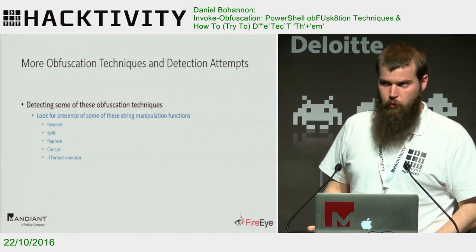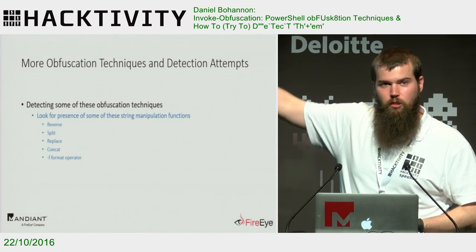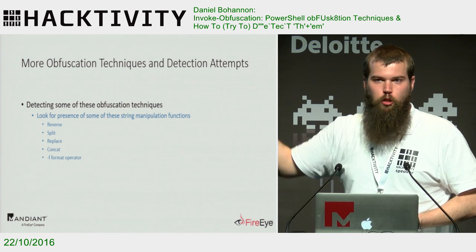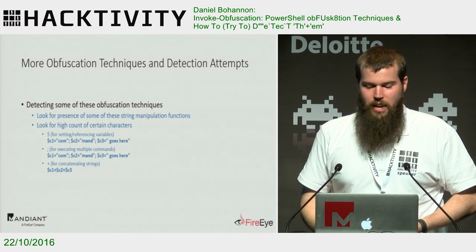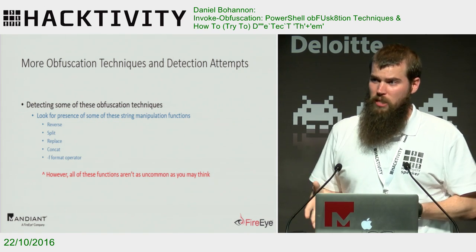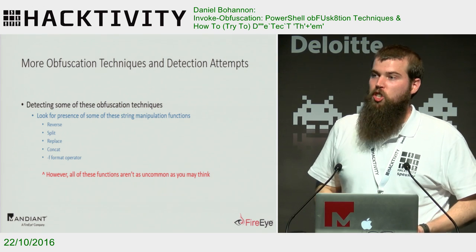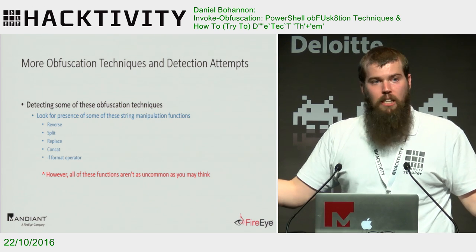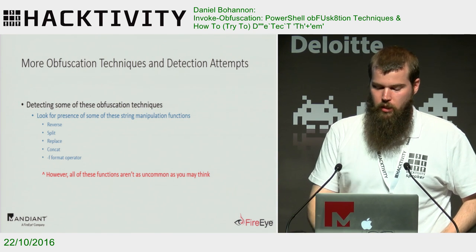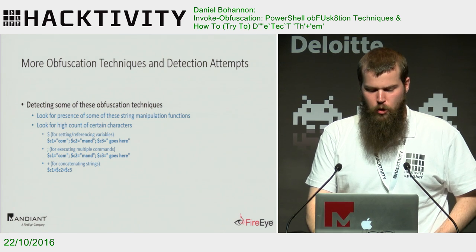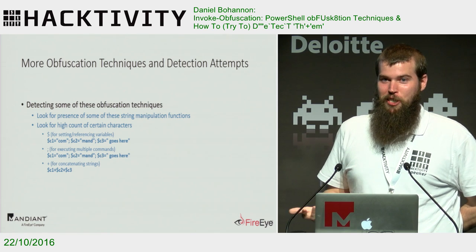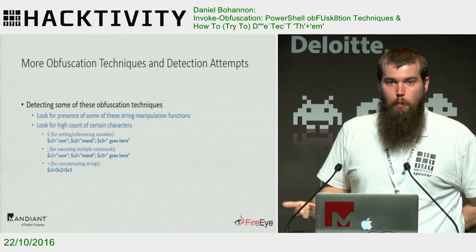How can we detect some of these techniques? We can start looking for string manipulation functions — there are so many ways to do this, both PowerShell's and .NET's manipulation functions. There are a lot of false positives that can come with this because some legitimate stuff uses these. But if you're a single organization, you should absolutely be looking for these. When we're trying to scale to all clients at the same time, it becomes trickier. You can also look for high counts of certain characters — how many tick marks did you legitimately expect to show up on the command line for PowerShell? Probably not 50.